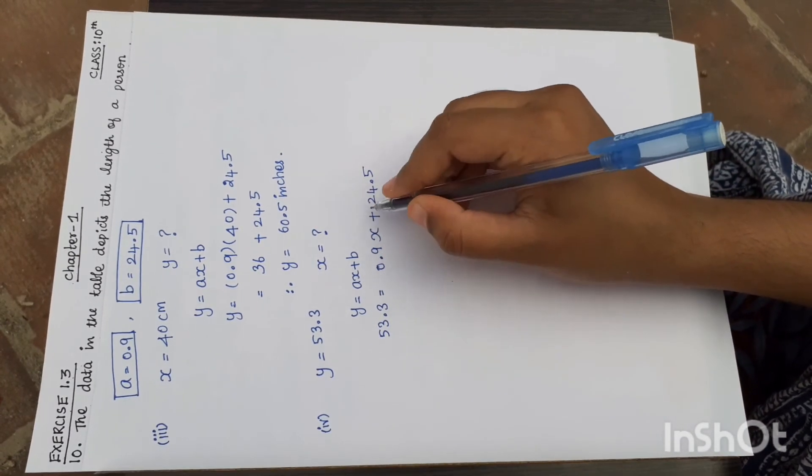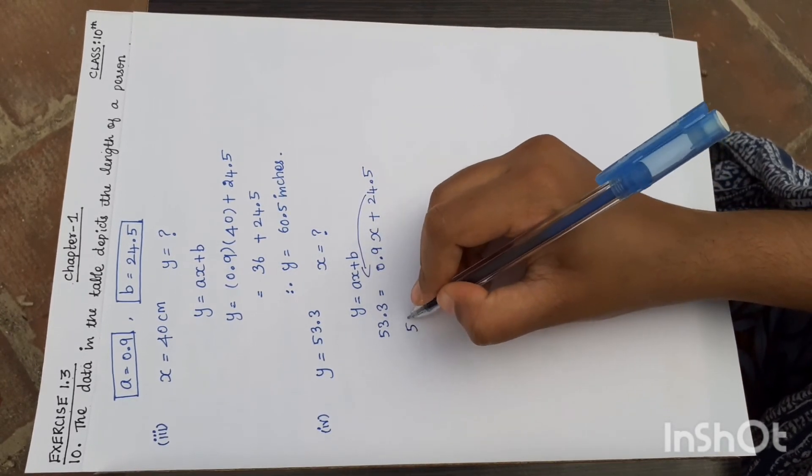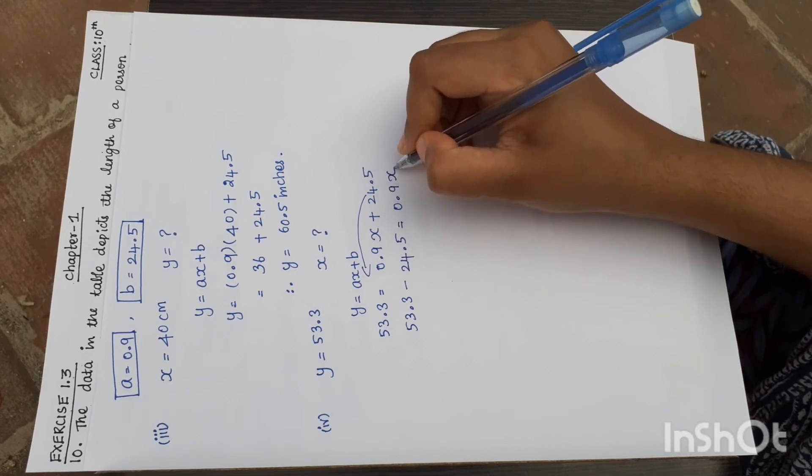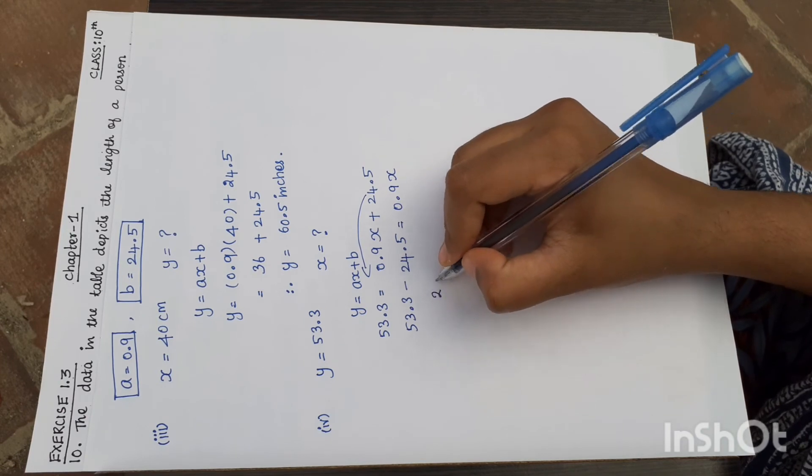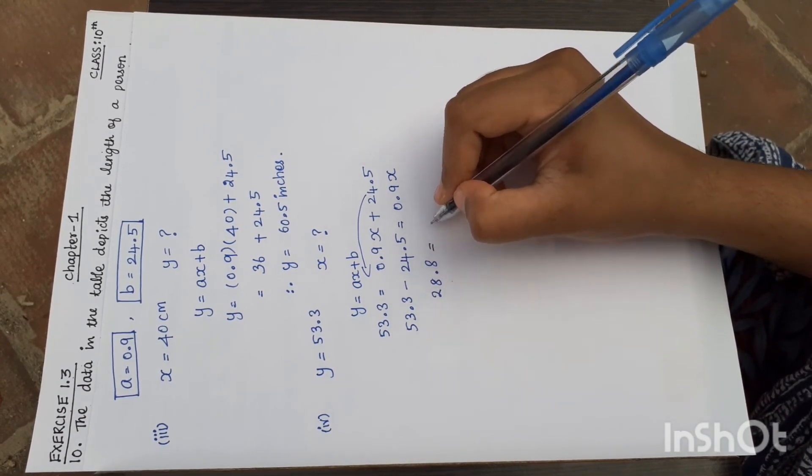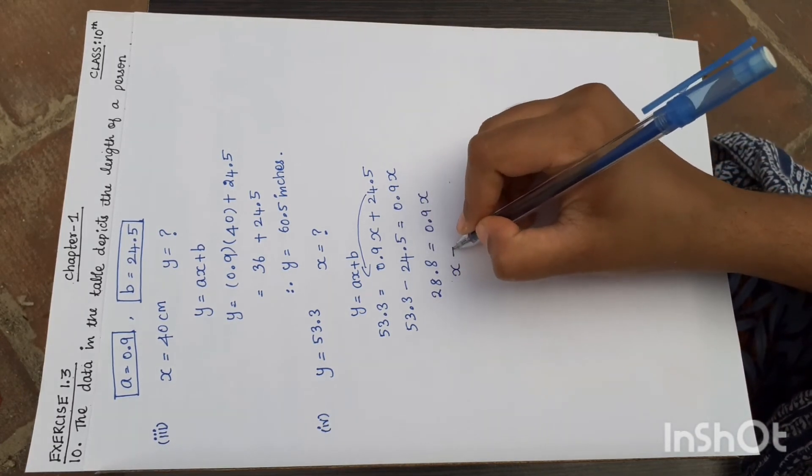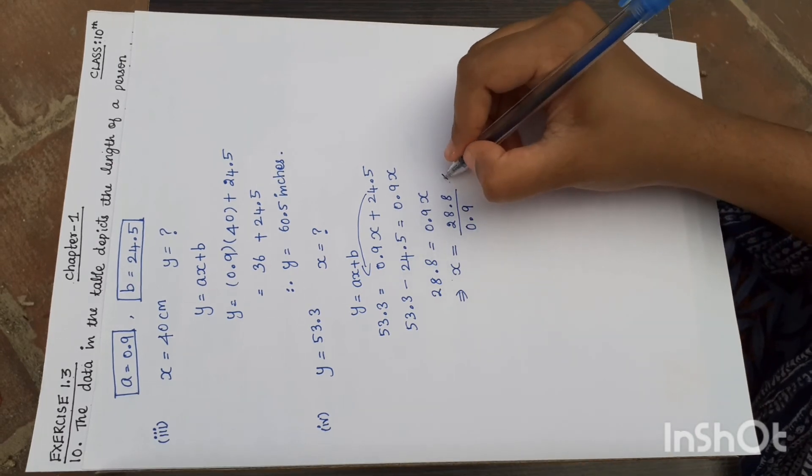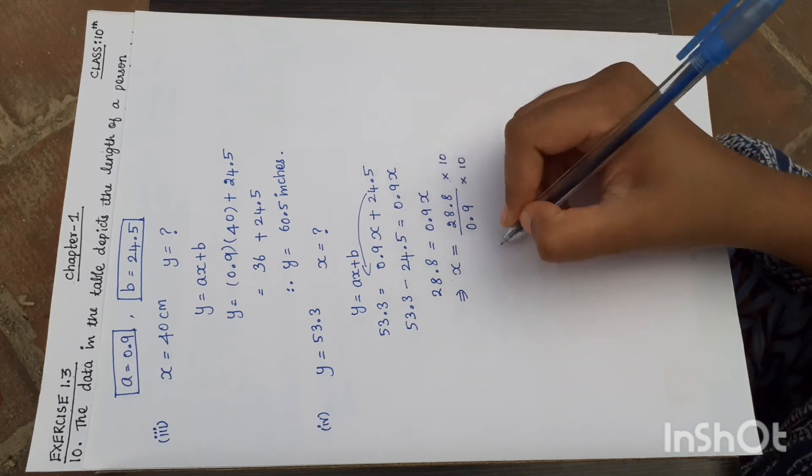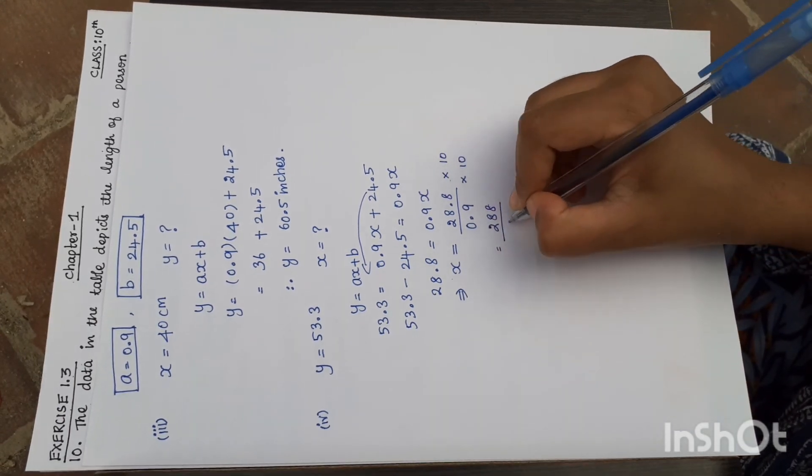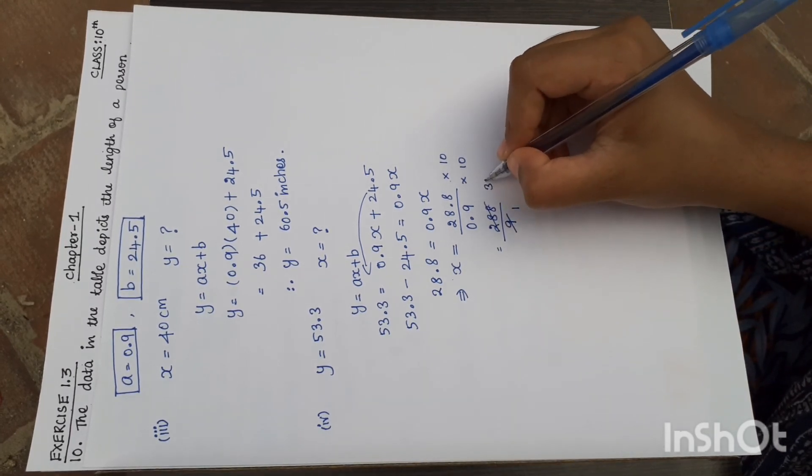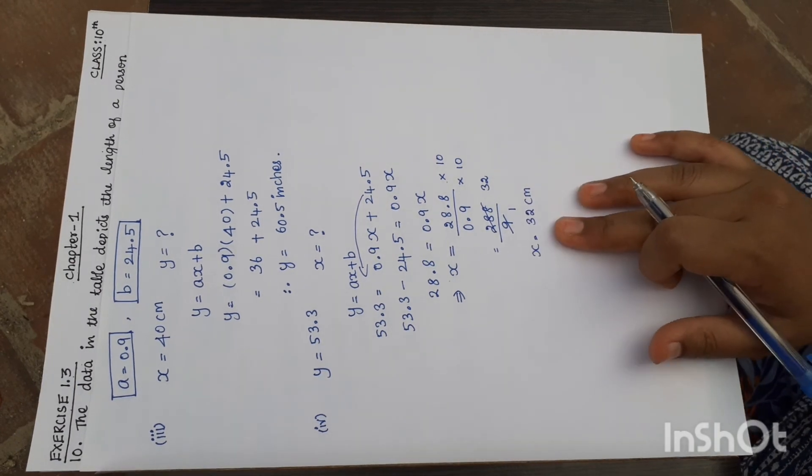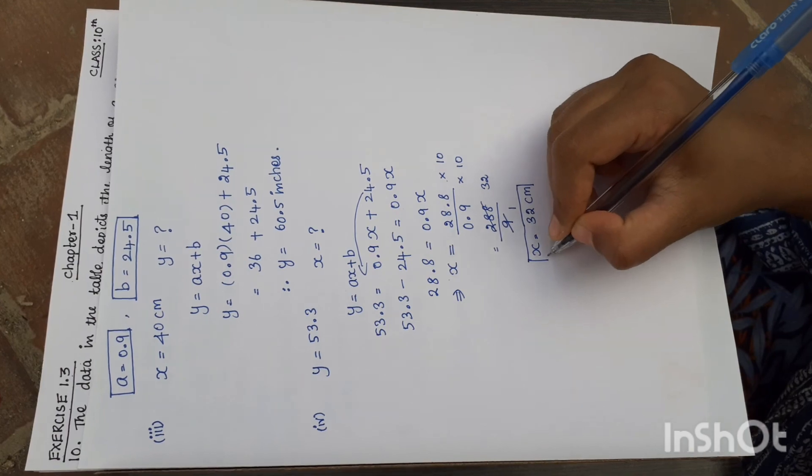Now we need to solve for x. Moving the constant term to the other side: 53.3 minus 24.5 equals 0.9x. 53.3 minus 24.5 equals 28.8. So 28.8 equals 0.9x. Therefore, x equals 28.8 divided by 0.9. Multiplying numerator and denominator by 10 gives 288 divided by 9. From the 9 tables, 9 times 32 equals 288. So x equals 32 cm. This is the answer for subdivision 4.